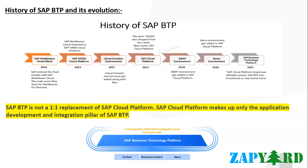Although SAP BTP's offering is relatively new, it consists of solutions that have been around for years, and some of these BTP components go back quite a way. One of the pillars of SAP BTP — the so-called application development and integration pillar — can trace its lineage back to SAP NetWeaver Cloud NEO, SAP's first platform as a service offering. This image shows the brief timeline about the history of SAP BTP.